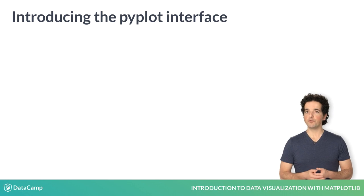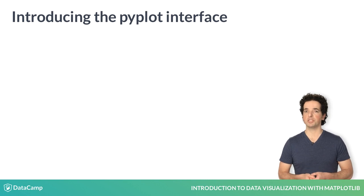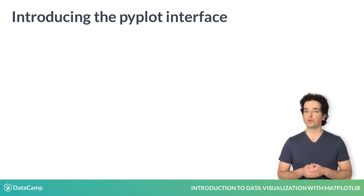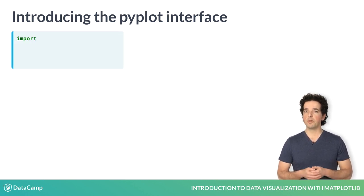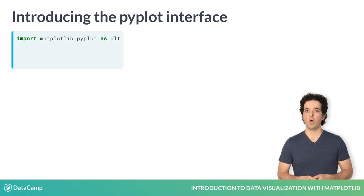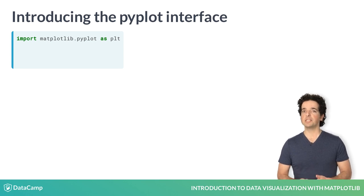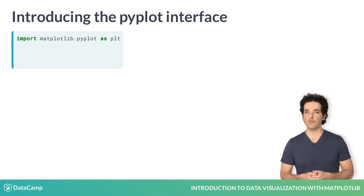There are many different ways to use Matplotlib. In this course, we will use the main object-oriented interface. This interface is provided through the PyPlot sub-module. Here, we import this sub-module and name it PLT. While using the name PLT is not necessary for the program to work, this is a very strongly followed convention, and we will follow it here as well.